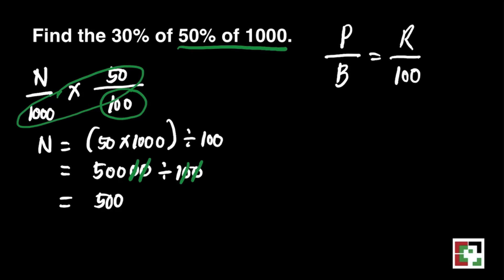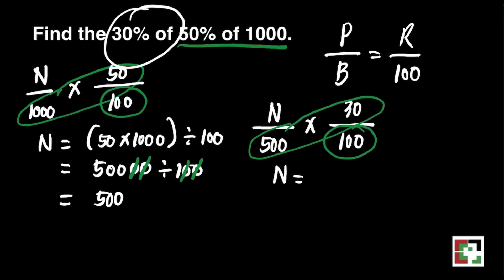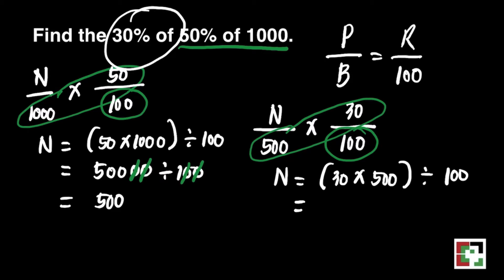500 is not yet the final answer. We have to find the 30% of it. We have to substitute n over 500 times 30 over 100. To get the value of n, we do cross multiplication. That will give us 30 times 500 divided by 100. We have to get the value of 30 times 500. That's 3 times 5. That's 15. Just add 3 zeros divided by 100. 15,000 divided by 100, just cancel zeros and we'll get 150. The 30% of 50% of 1000 is 150.